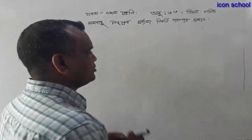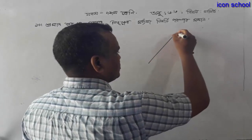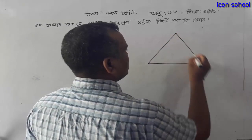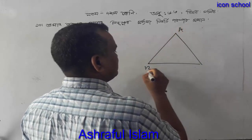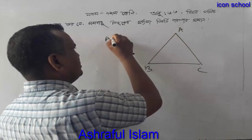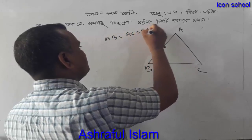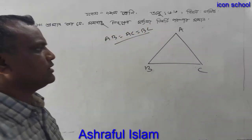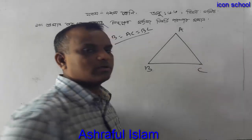I am going to solve this problem. So A, B, A, C, B, C. Since it is 3 times, you can see the next step.